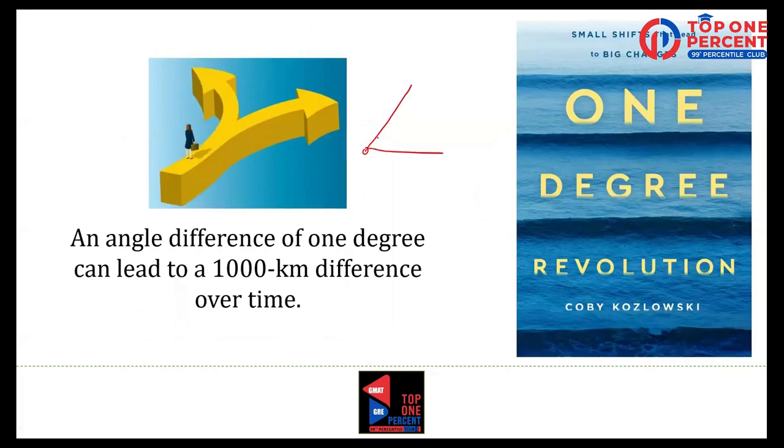...in one angle. If this difference is one degree, I'm making it larger for all of you to see, over a distance, over a considerable distance, can even mean a thousand kilometer distance. You fire two arrows one degree apart. If this is one degree apart, they can actually be one thousand kilometers apart someday.